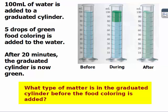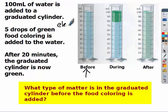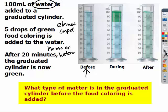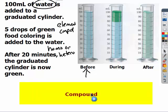So it says that we have 100 milliliters of water that's added to a graduated cylinder. So what type of matter is in the graduated cylinder at this step? It can be an element, a compound, a homogeneous or heterogeneous mixture. We're going to pause the video and figure out which type. So this one says that all we've added is water. Water is a compound.